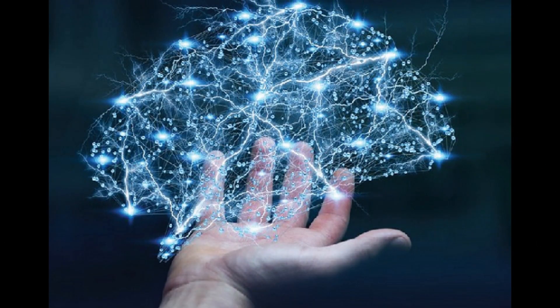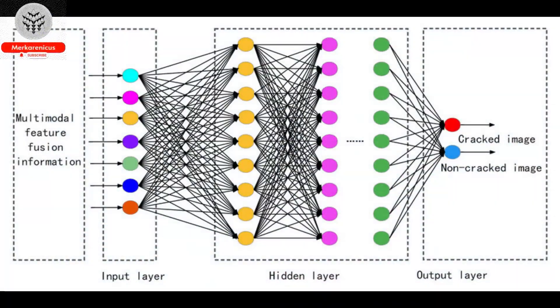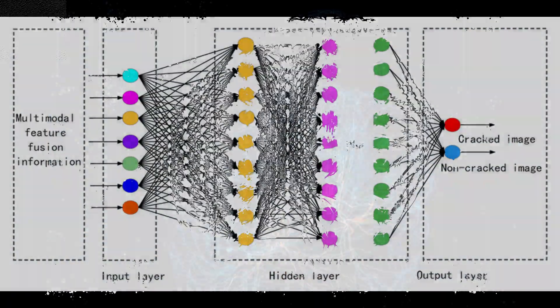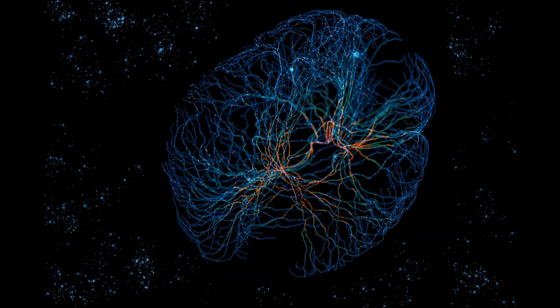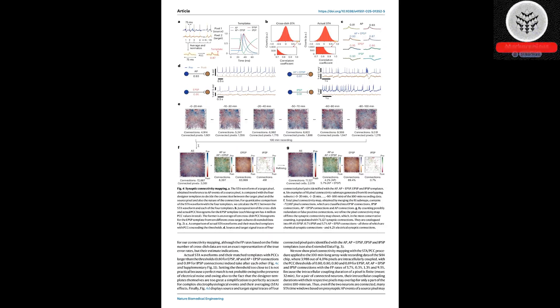From this trove of data, a deluge of sub-threshold potentials and action potentials, the team catalogued connections into inhibitory, weak excitatory, and strong excitatory categories with an estimated 5% error rate. Yet the silicon chip is only half the story.